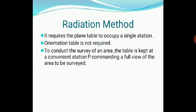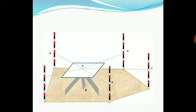In the radiation method, the plane table is occupied at a single station, so orientation is not required. The table is kept at a particular station P from which a full view of the area to be surveyed can be commanded. All stations must be visible from that fixed location P.